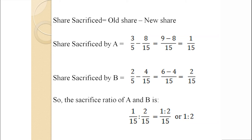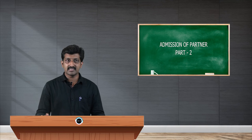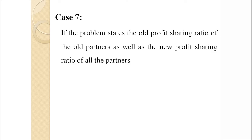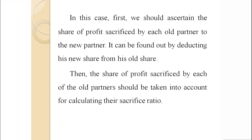So the sacrifice ratio of A and B is 1/15 : 2/15, that is 1:2. The last case is case number 7: if the problem states the old profit sharing ratio of the old partners as well as the new profit sharing ratio of the partners. In this case, first we should ascertain the share of profit sacrificed by each old partner to the new partner by deducting their new share from their old share. Then the share of profit sacrificed by each old partner should be taken into account for the calculation of their sacrifice ratio.